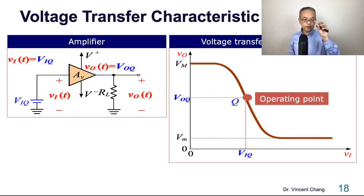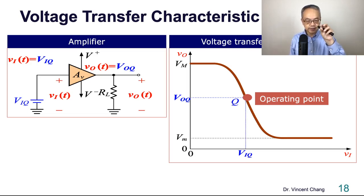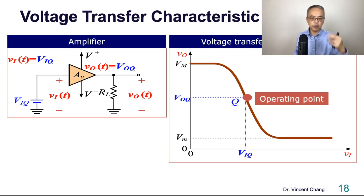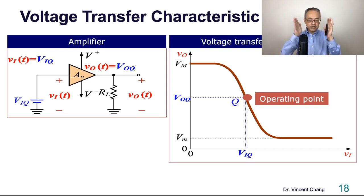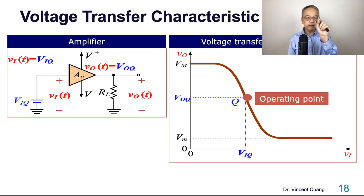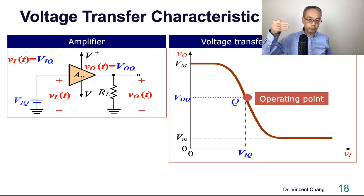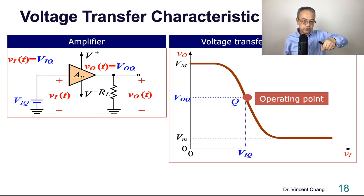Let's focus on the amplifier. When a circuit operates as an amplifier, we need an operating point. We want the operating point to be in the middle of the curve, not on either saturation side. The corresponding output voltage at that point is the DC output voltage VOQ, and the corresponding input voltage is the DC input voltage VIQ.